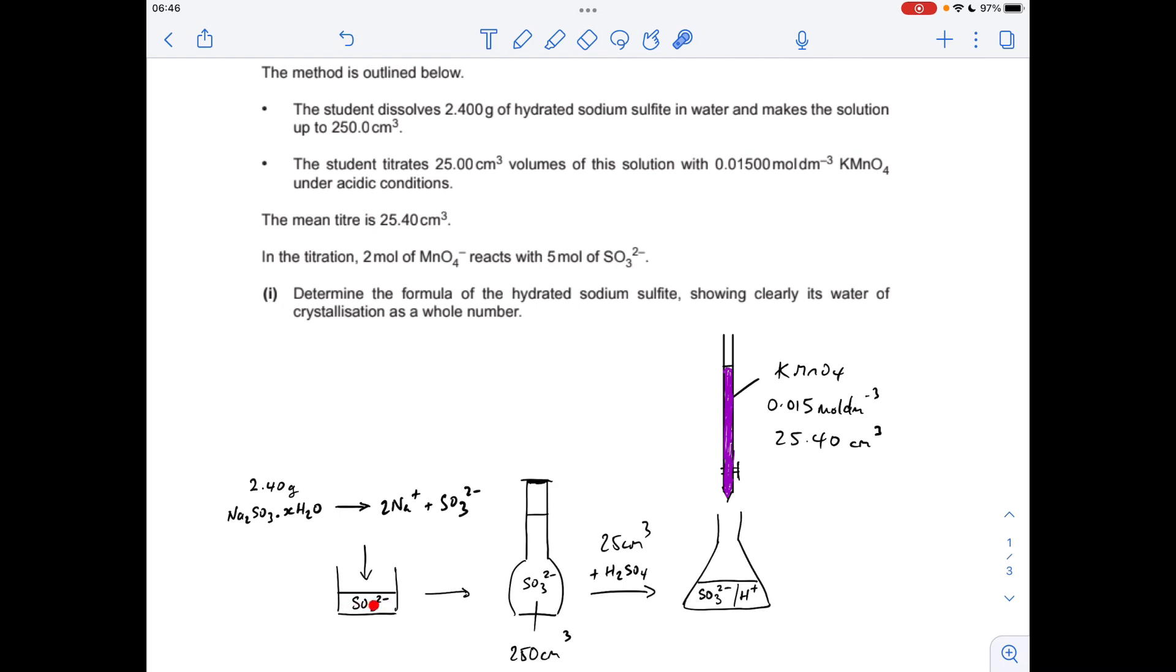So the sulfite ions are in there. They're then put into a 250 cm³ volumetric flask and made up to the mark. A tenth, 25 cm³, is taken out. Acidic conditions are created, normally would use dilute sulfuric acid for that. So in the conical flask you've got your sulfite ions and your H+ ions, and then a titration is carried out using KMnO4.